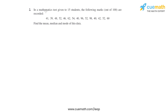Question number two says that in a mathematics test given to 15 students, the following marks out of 100 are recorded. So these are the marks of 15 students who had given the test. We have to find the mean, median and mode of this data.